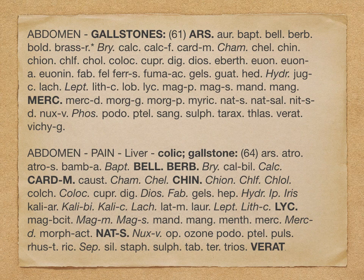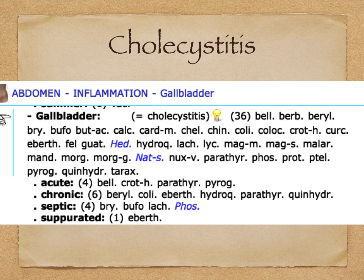The important remedies for gallstone colic are Berberis vulgaris and Carduus marianus. These are the two remedies we give in mother tincture or in lower potency to get fast improvement for the acute pain. Both Berberis vulgaris and Carduus marianus will work.